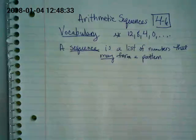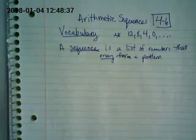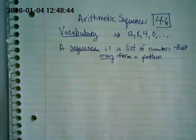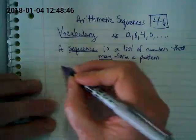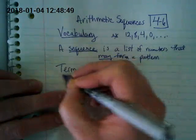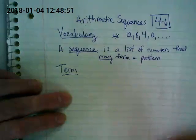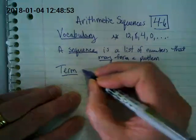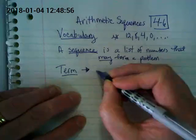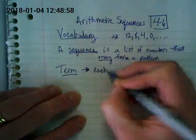As we start doing some of these examples, you guys are going to probably realize you were doing things like this in elementary school. They were just asking you to find the pattern, and now we're going to be looking at a specific kind of pattern. Another vocabulary word is the word term. Quite simply, a term in a sequence is every number that's in it, or each number.